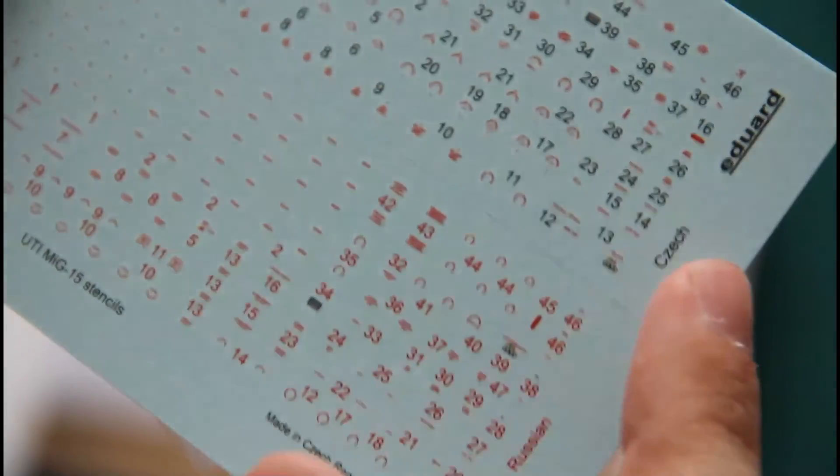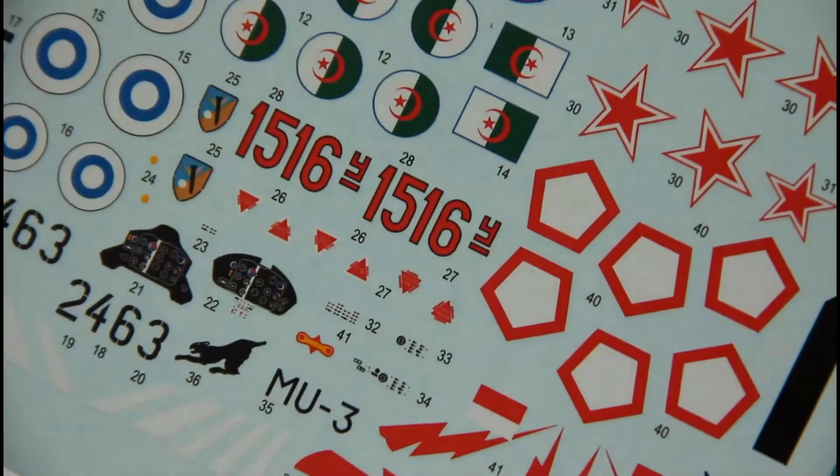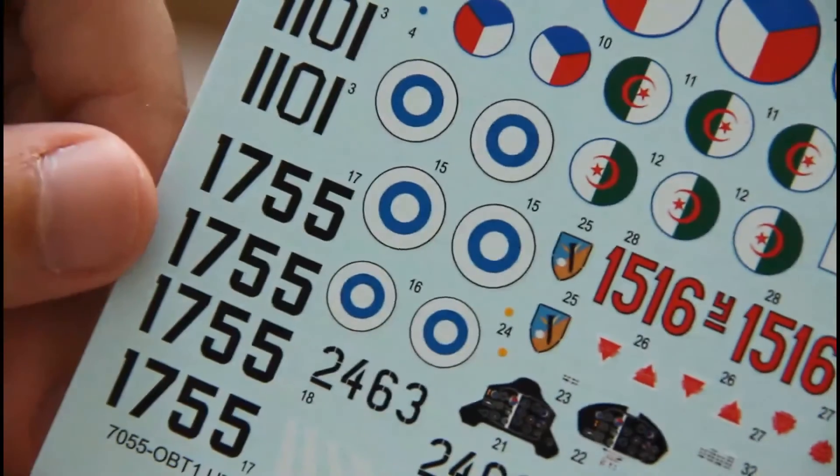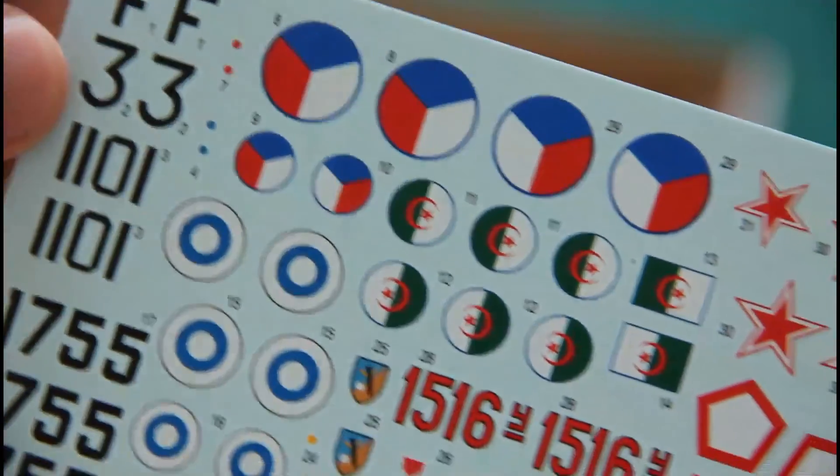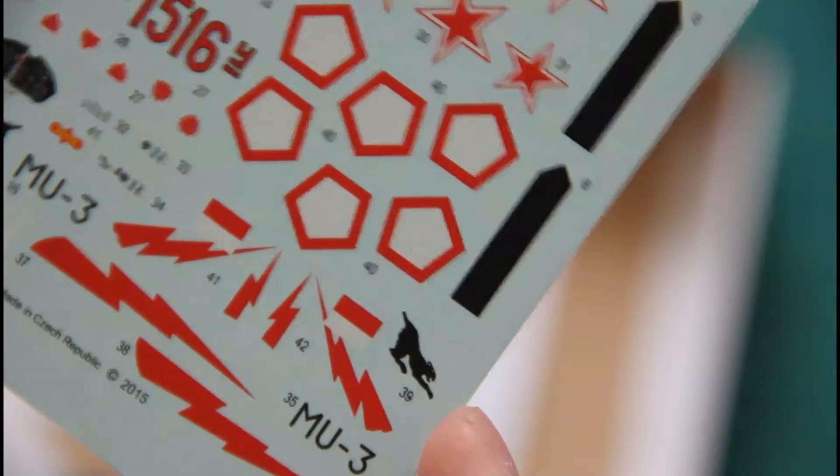And as you can see we have here Czech and Russian stencils provided so I'm sure that you will have one set left after application on the model. Both decal sheets are printed in Eduard, nevertheless printing quality is absolutely excellent. So here we have the main sheet which contains all necessary symbols and decals for the dashboards and I have to say that it's really nice product and I hope that application won't be difficult either.